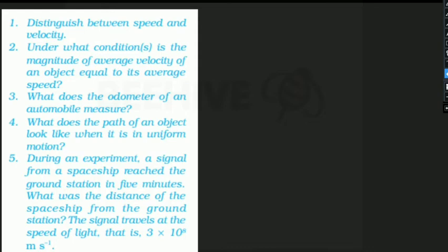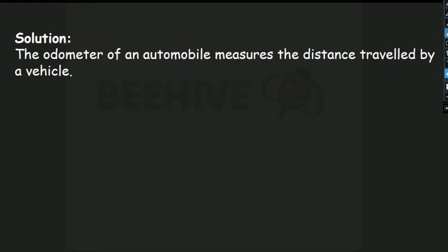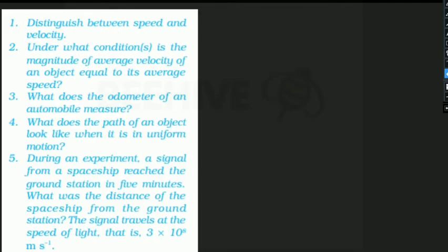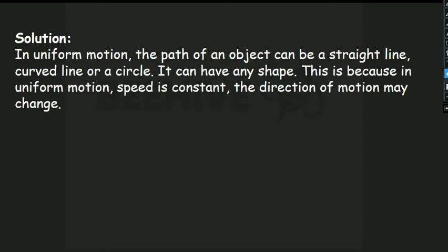What does the odometer of an automobile measure? The odometer measures the distance traveled by the vehicle, while the speedometer measures the speed. What does the path of an object look like when it is in uniform motion? In uniform motion, the path of the object can be a straight line, curve, or a circle — it can have any shape, because in uniform motion only speed is constant.